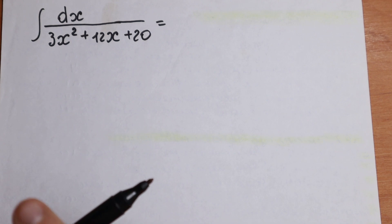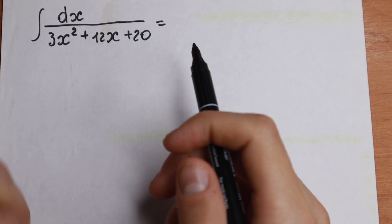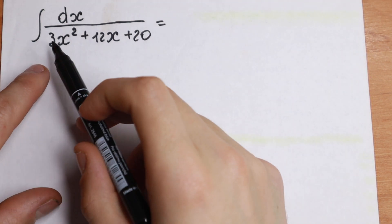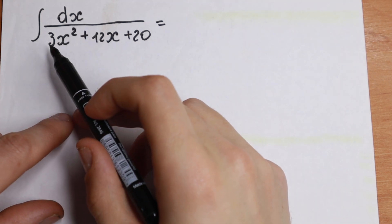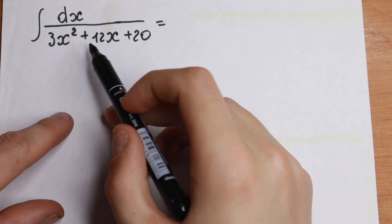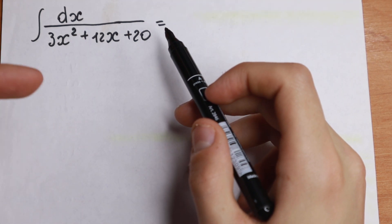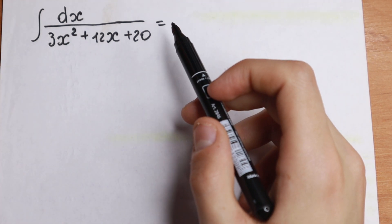Hello everyone! Welcome back to Hey Mathematics! Today we have an interesting integral: the integral of dx over 3x squared plus 12x plus 20. How can you solve this integral?